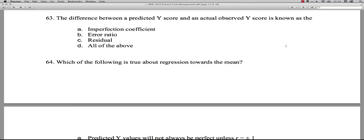The difference between a predicted Y score and an actual observed Y score. That actually means you've done regression, because you get an equation with a slope and an intercept, and you take a person's X score, for instance like their height, and you use it to predict their score on Y, for instance their weight. And then you have this difference between what you predict and what is in fact the case, is known as the imperfection coefficient? I've never heard of that term. The error ratio? No, that's not it. The residual? That is the correct answer.